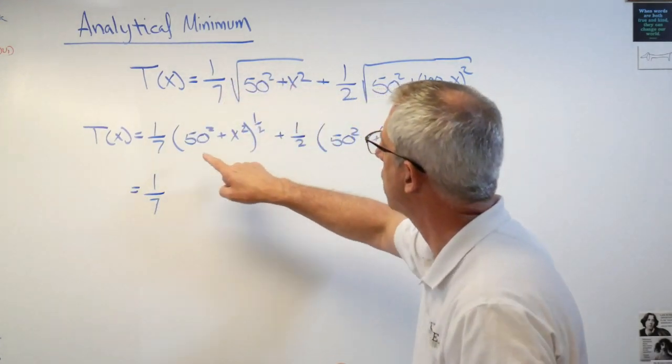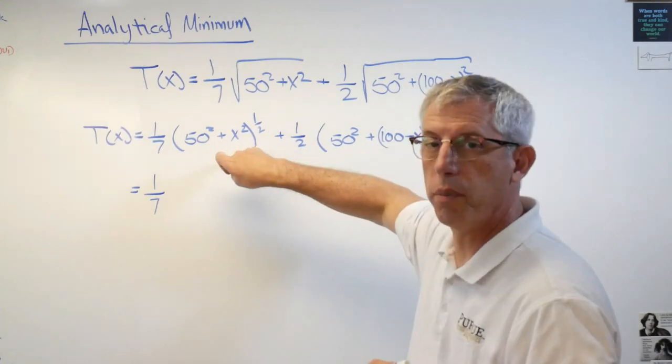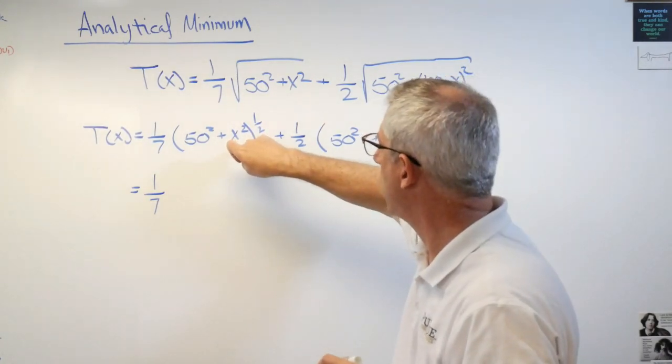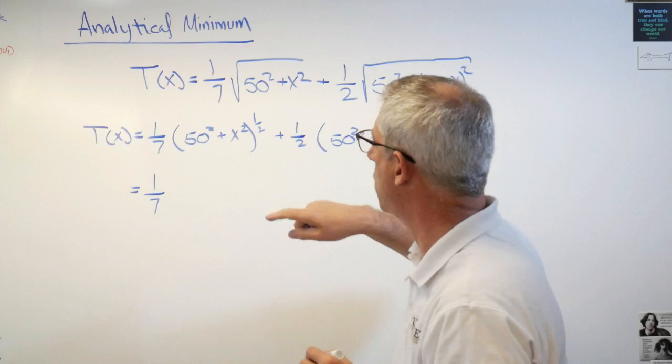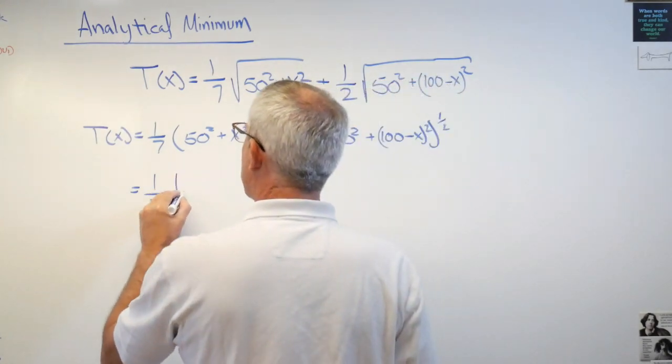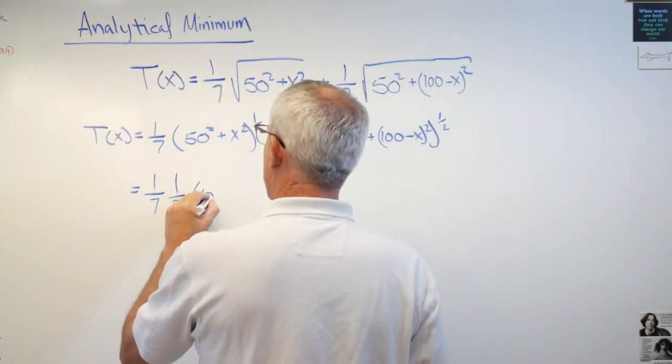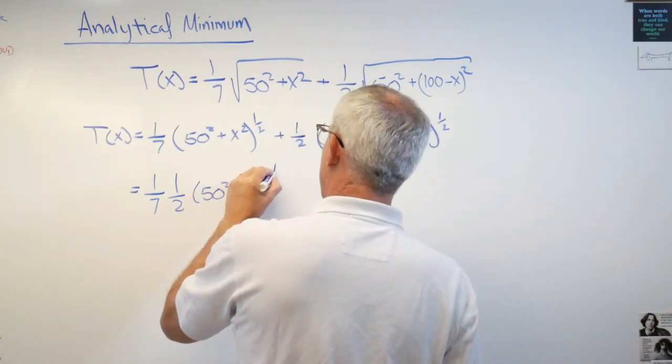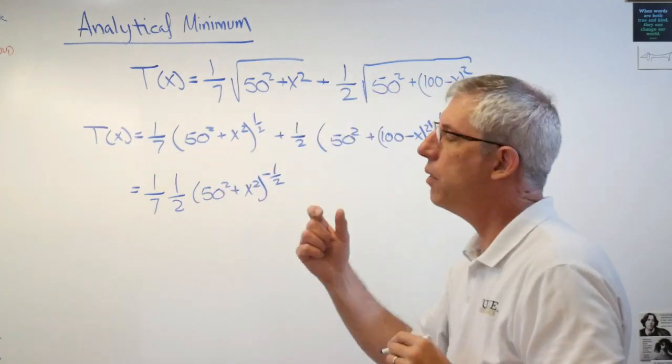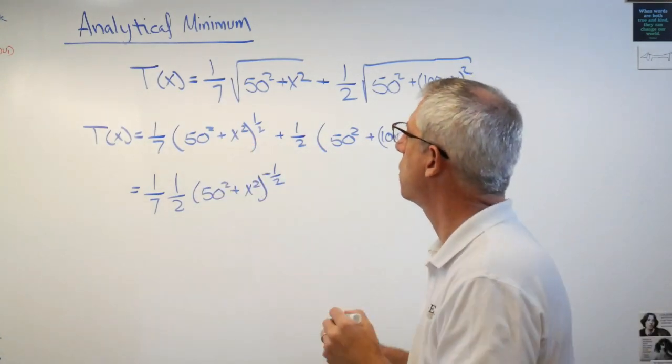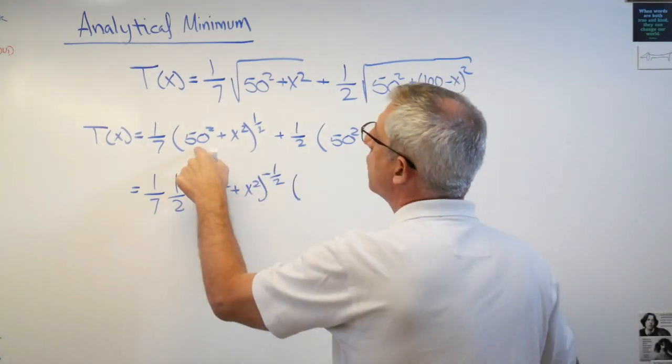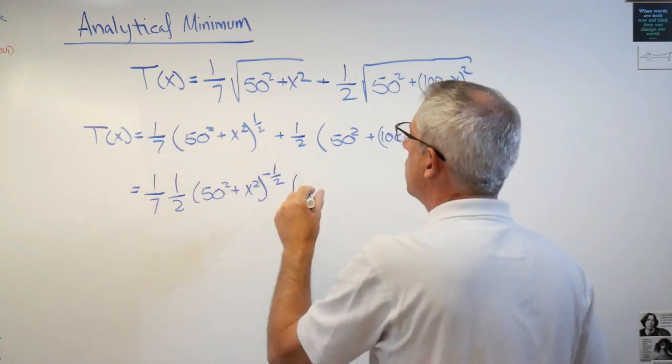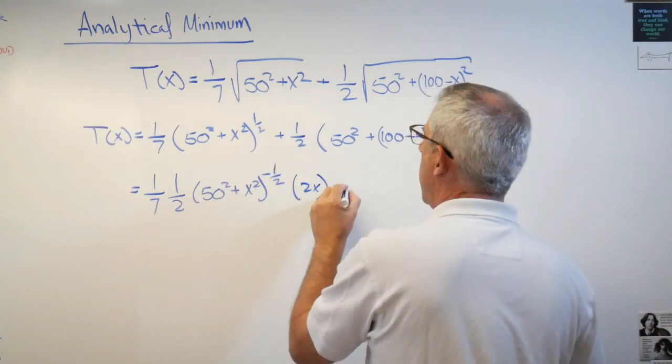Square root is the same thing as raising something to the one-half power. Now we get to use the power rule and that makes things a lot simpler. One over seven, that's just a constant. When I take a derivative of something raised to a power, I take the exponent, push it down there, and subtract one from that.